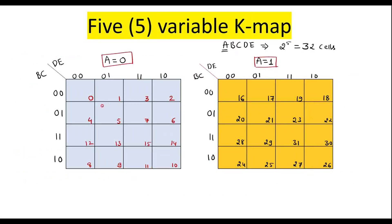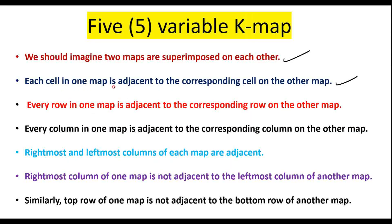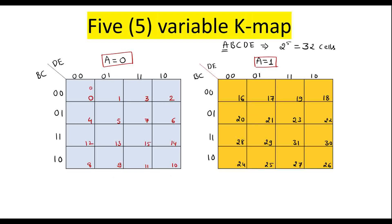That is, cell number 0 is adjacent with cell number 16, because each cell in one map is adjacent to the corresponding cell on the other map — meaning the cell at the same position. So 0 and 16 are adjacent to each other. Likewise, 1 is adjacent to 17, 3 is adjacent to 19, 2 is adjacent to 18, 4 is adjacent to 20, 12 is adjacent to 28, and so on.